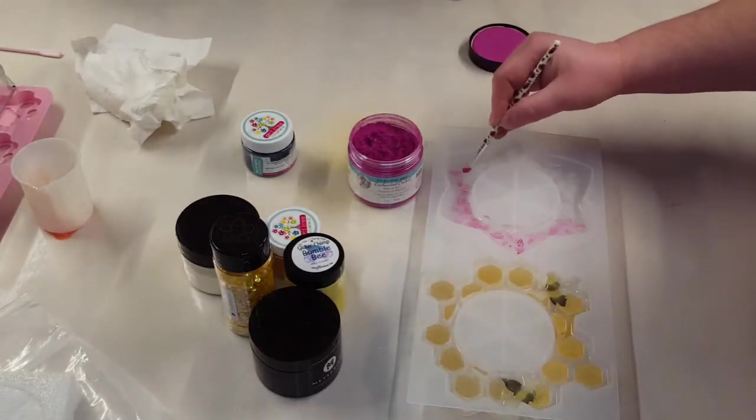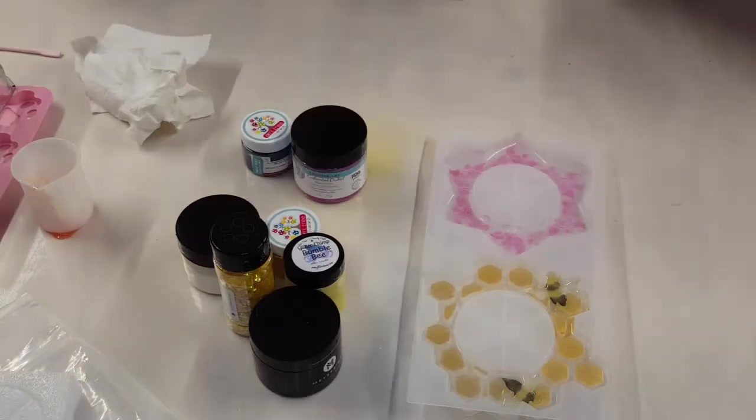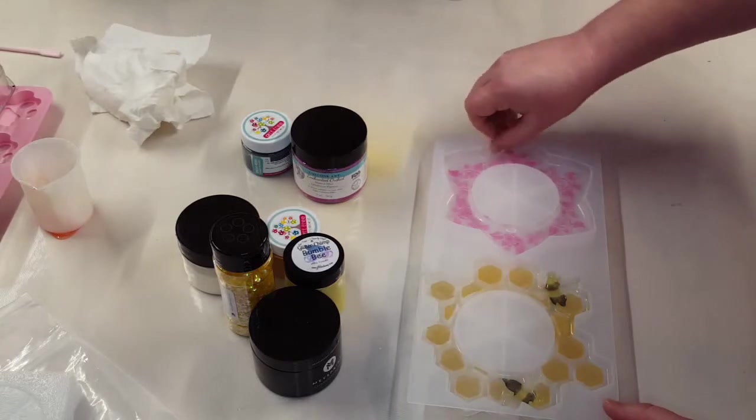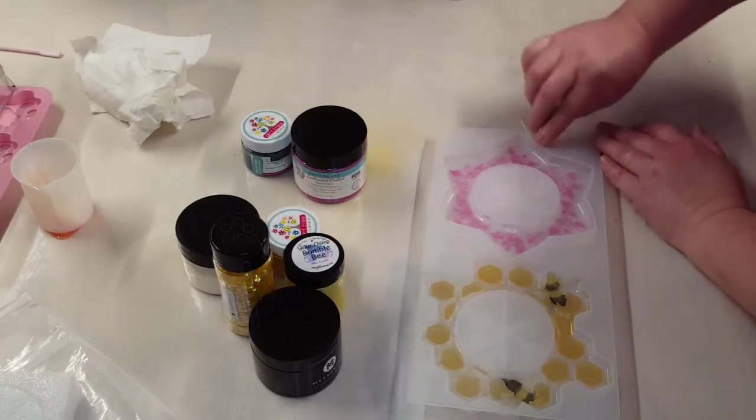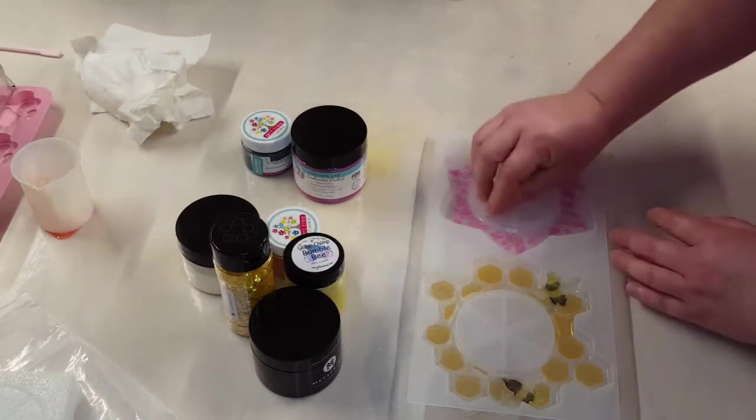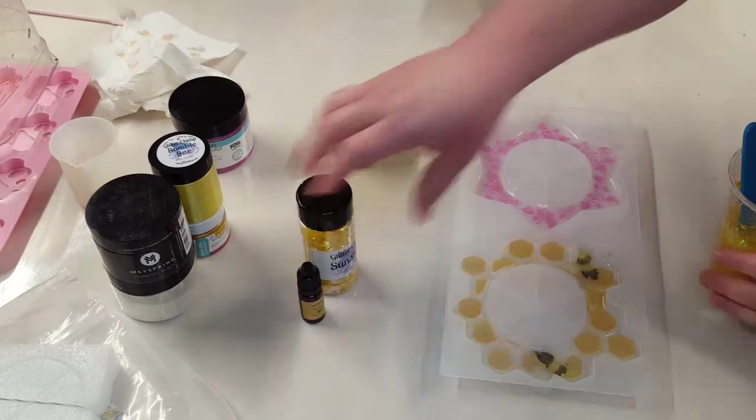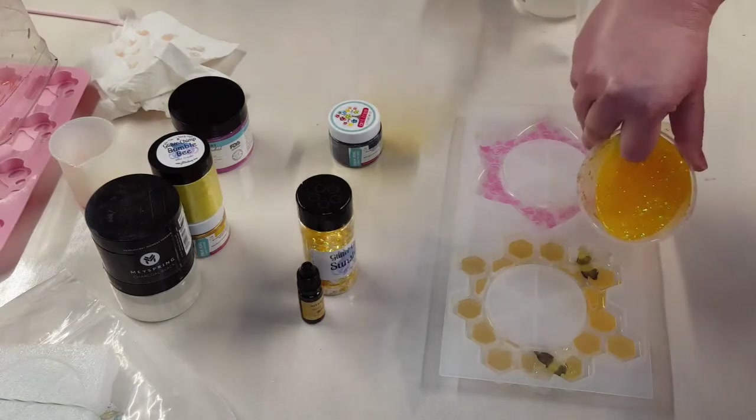Again using this makeup brush to just paint it on the leaf petals in this flower. I will come back with the tape and alcohol wipe and get off what I can of the mica that got where I didn't want it. Once I have that done I'm going to let this set for those bees to cure and then I'm going to fill up the rest of the mold.